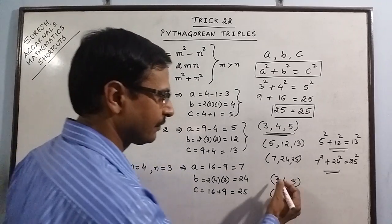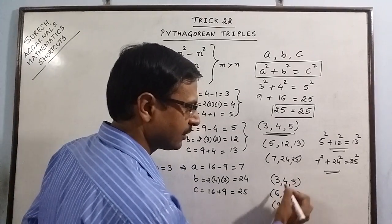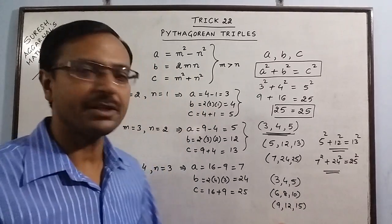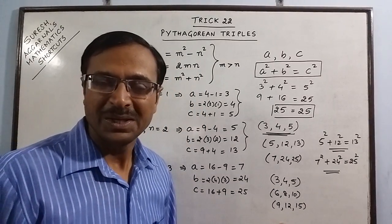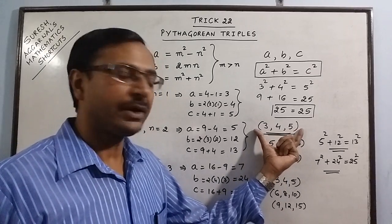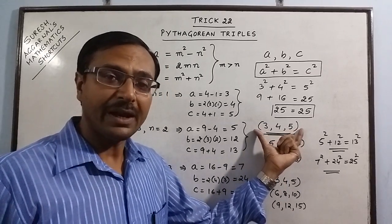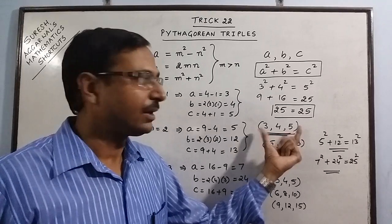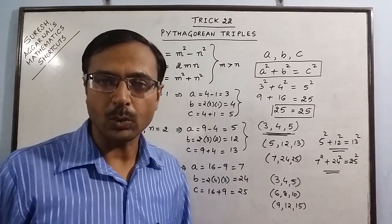You can triple this, 3, 3s are 9, 4, 3s are 12, 5, 3s are 15. This is yet another Pythagorean triplet. So, if you know one primitive Pythagorean triplet, then you can arrive at many other Pythagorean triplets by multiplying all 3 numbers by a constant quantity.